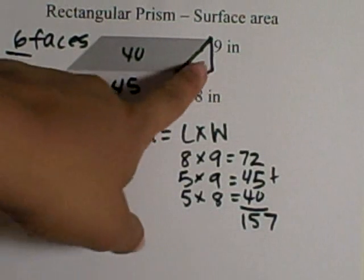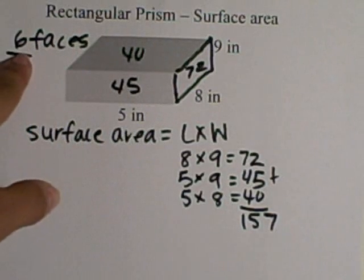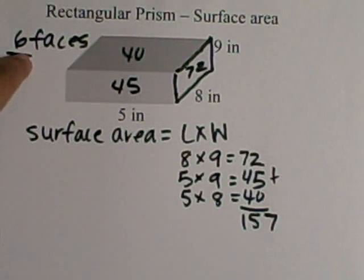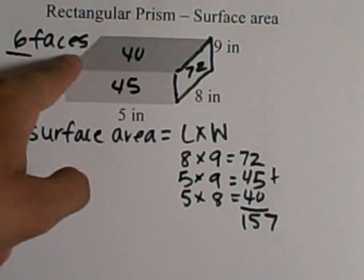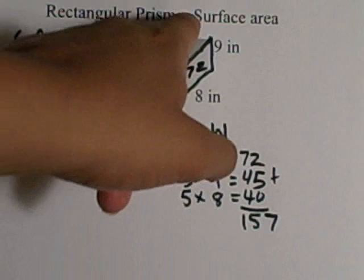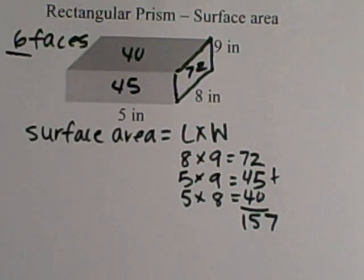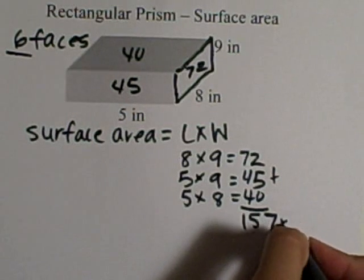Now, I know the area of these 3 faces, but I still have 6 that I need to solve. So I need to solve for 3 more. And if I look, I'm going to know that this one is equal to this side, this is going to be equal to the back side, and the top and the bottom are also going to be equal to each other. So the next thing that I'm going to do is I'm just going to double those areas.